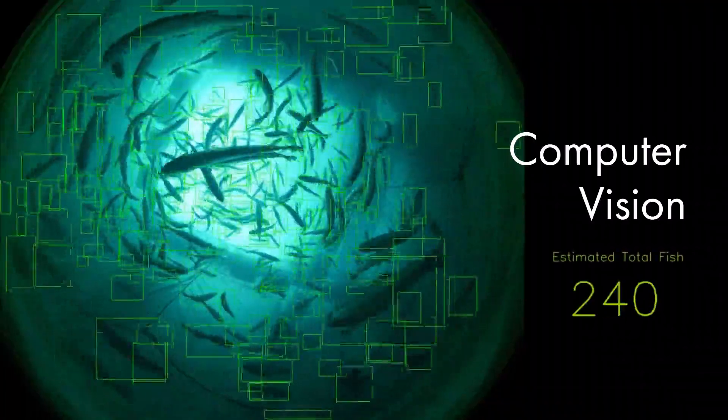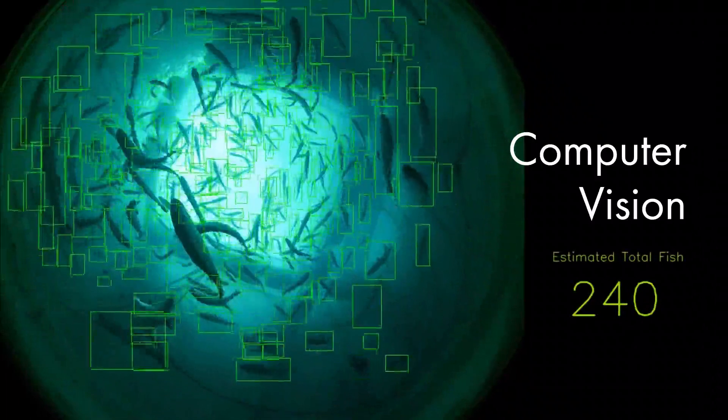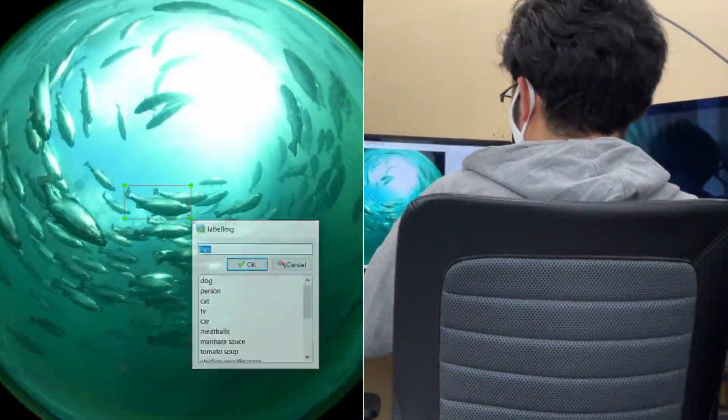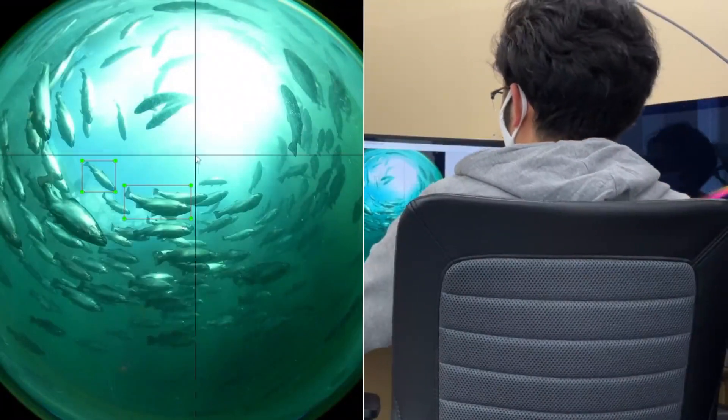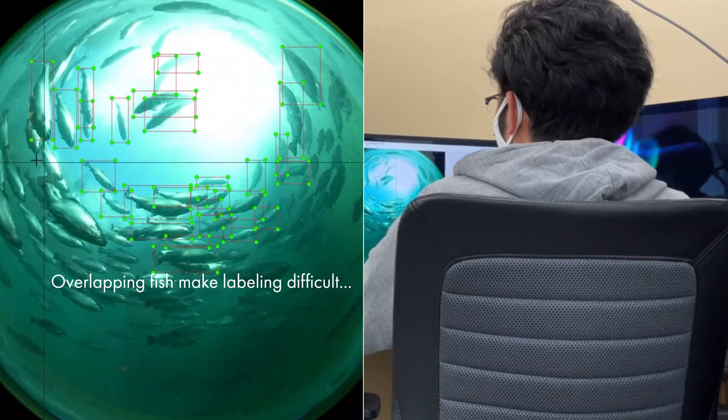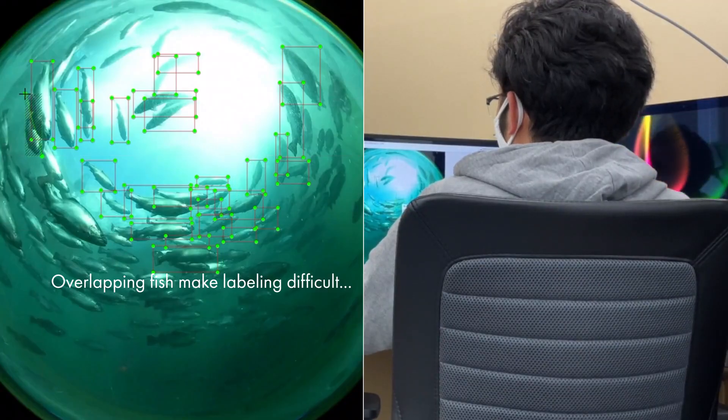To solve this problem, we propose a method to automate the counting of fish using computer vision. When creating a training dataset from videos of fish, the manual labeling workload takes an unreasonable amount of time and effort. Even if you did manually annotate fish bounding boxes, the fish are often overlapping, making labeling difficult.